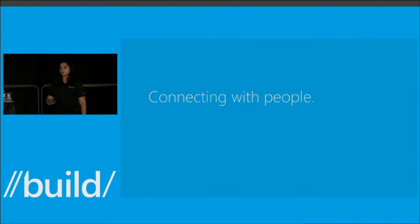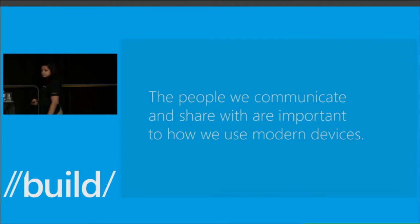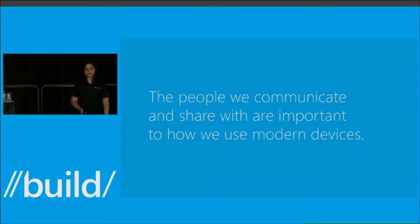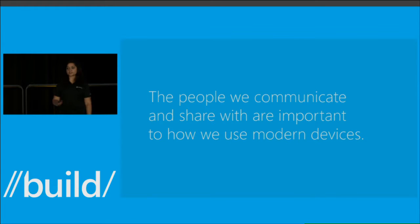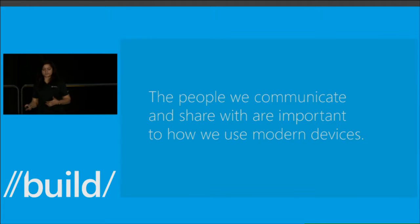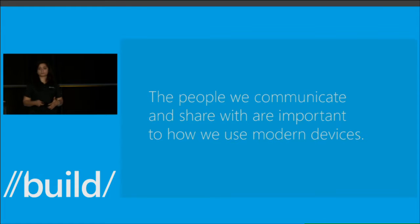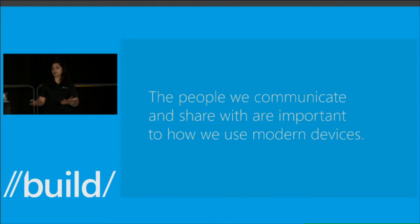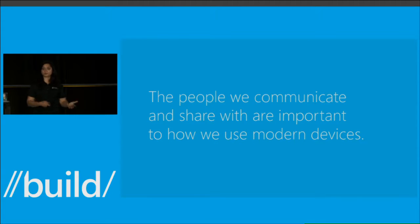With that, we'll talk about the first thing on the agenda: how do I connect with people from my apps? We use a lot of devices today. With all of these devices, it's important that there's an address book or a contact list, because the people we communicate with and share with are important to our experience. There are several ways we communicate with contacts — people you contact via email, people you call, people you text message. These communication experiences are important to the way we use devices, whether phones, tablets, or PCs.